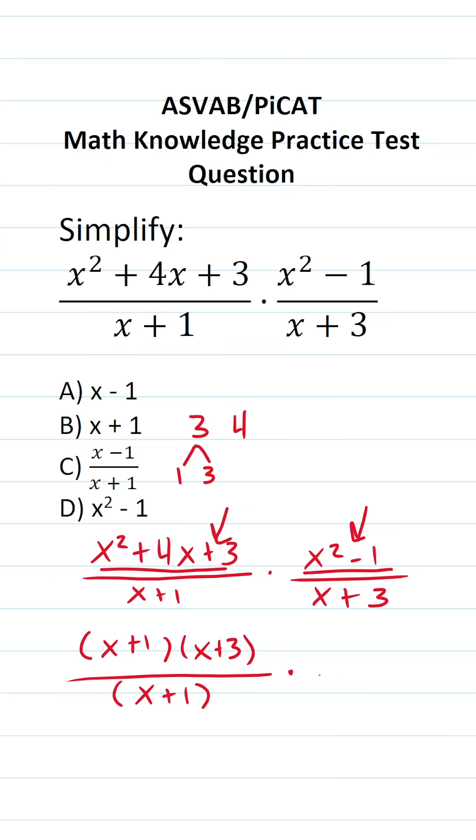Now let's factor x² - 1. This is the difference of two perfect squares, so when we factor it, it becomes (x + 1)(x - 1).